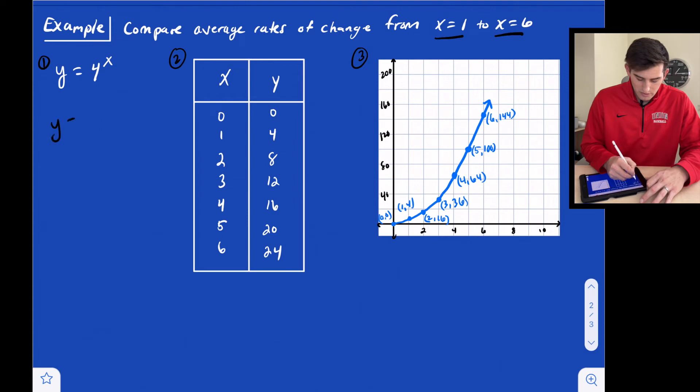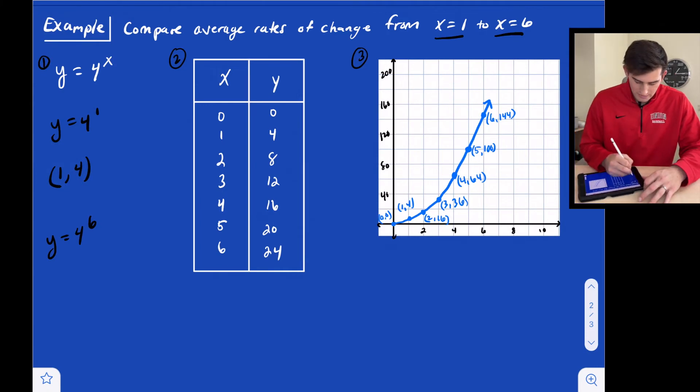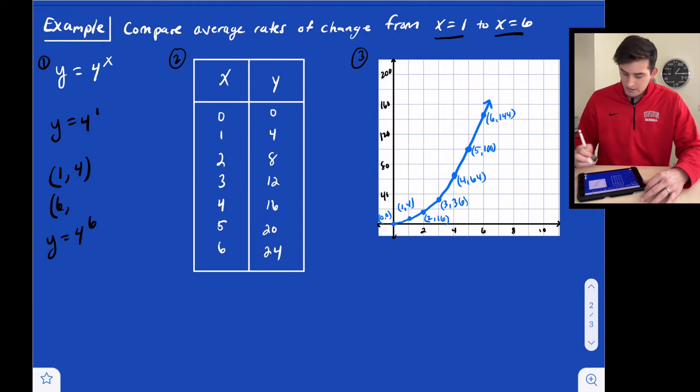We want to find what the coordinates would be of these three functions when x is 1 and when x is 6. For our equation, we can just plug in 1 for x. So when x is 1, y is 4. We can also plug in 6 for x. When x is 6, y is 4 to the sixth power, and we get 4,096. These are the two points that we're going to be working with to find our average rate of change.